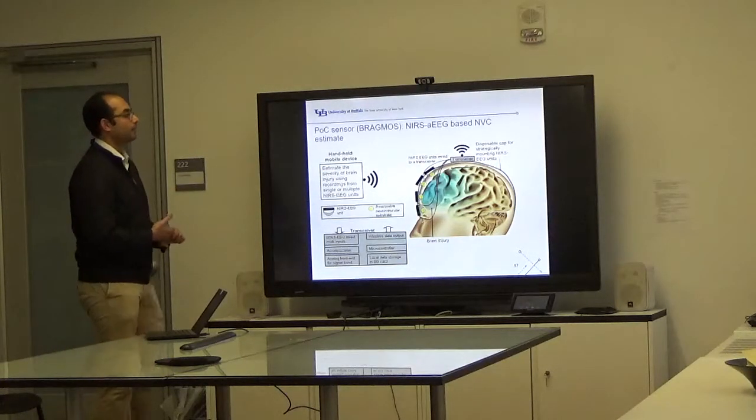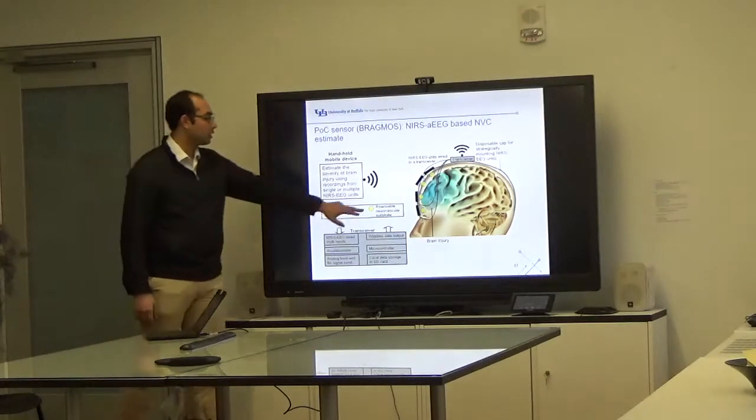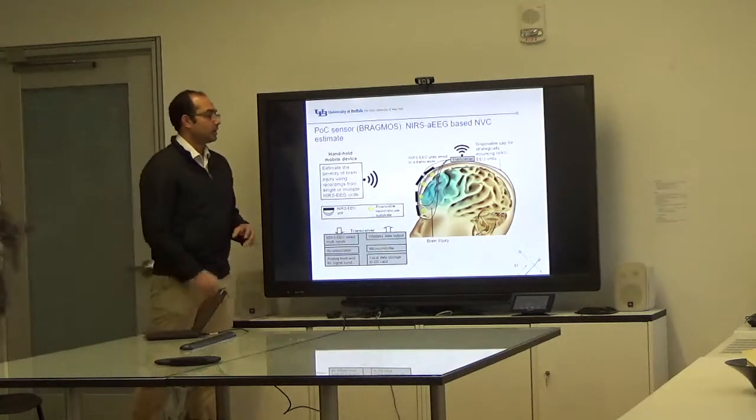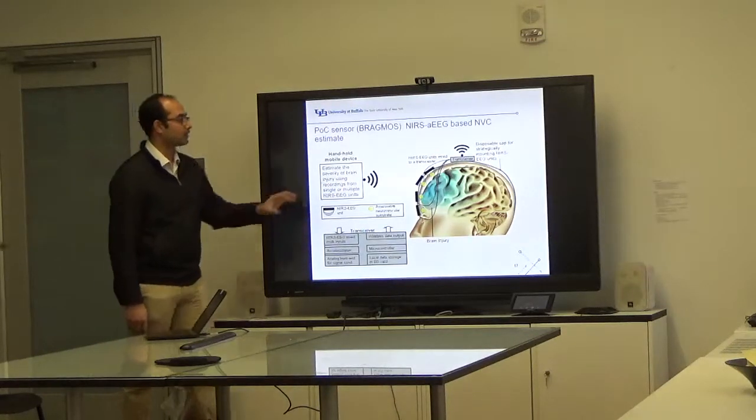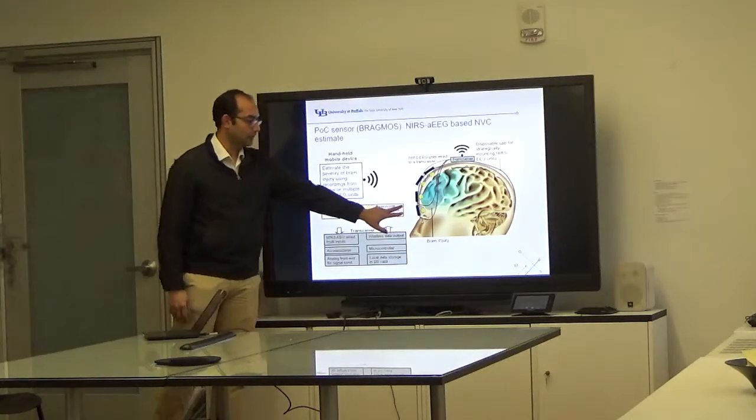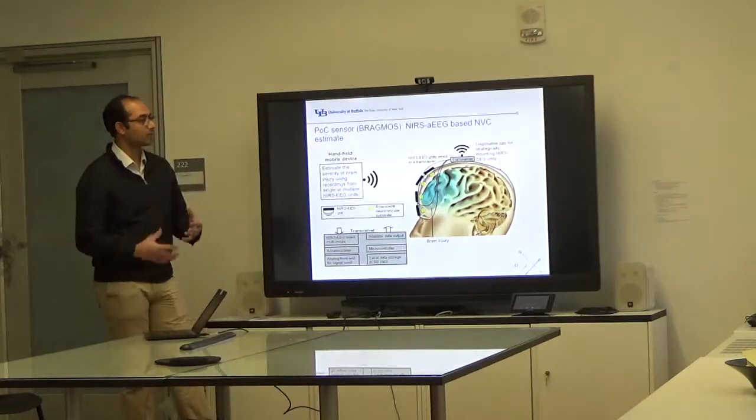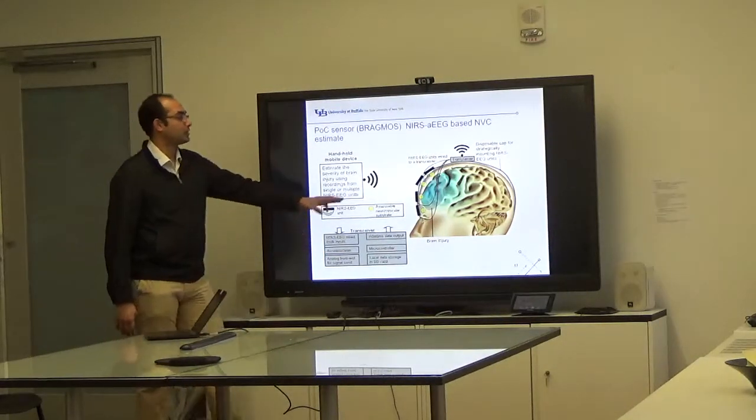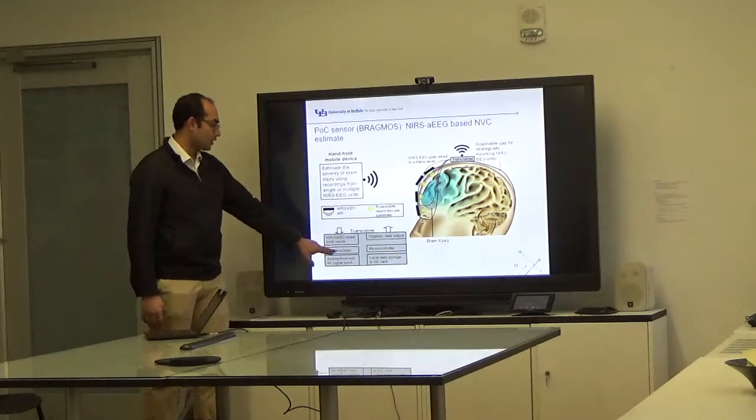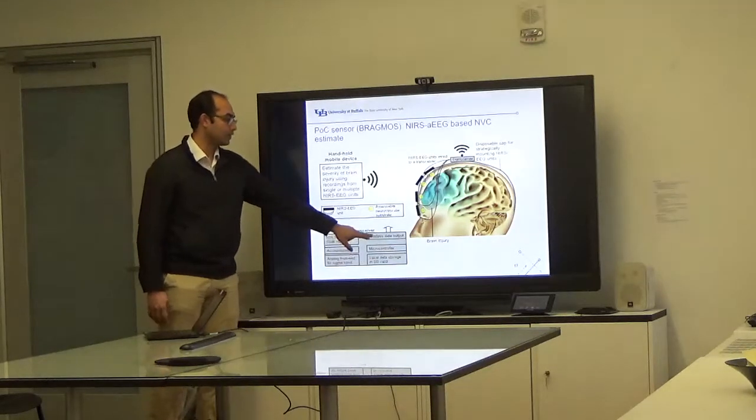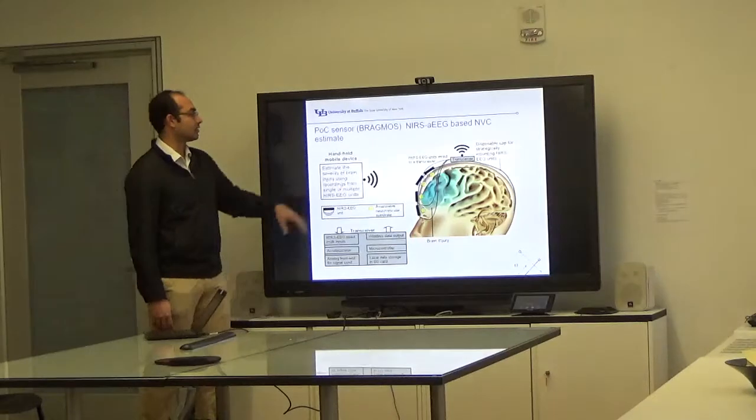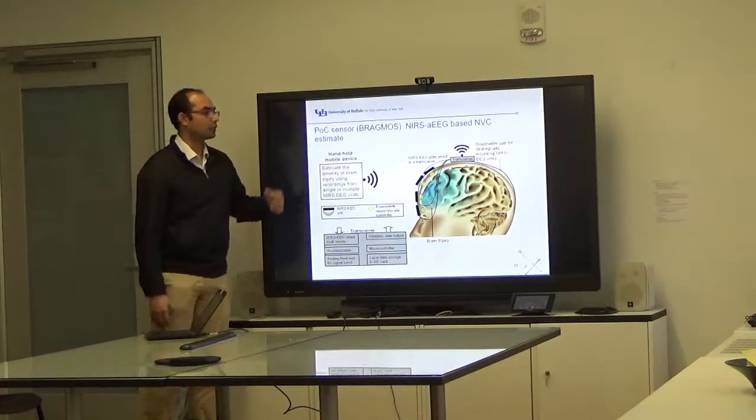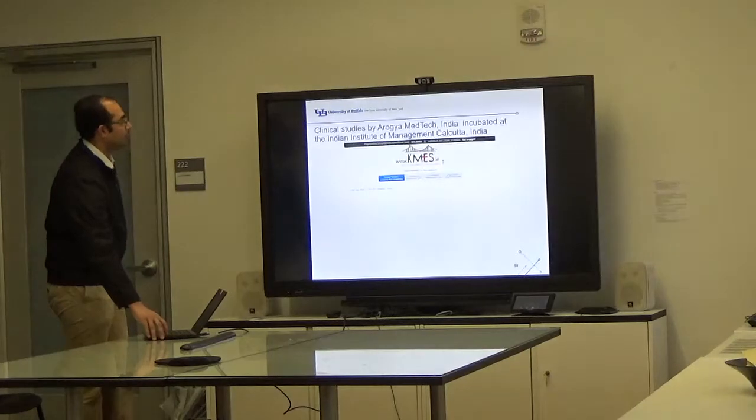This is the device that we are proposing. Right now, we are working on one unit. The idea is to place multiple units on the scalp strategically to capture different regions. Radhika will present this single unit, which is basically a modular design. That unit will connect to a hub which will have an accelerometer, local data storage, and wireless data output. This is connected to a handheld device, and in the handheld device will run the algorithm. The handheld device will then communicate with the remote center.